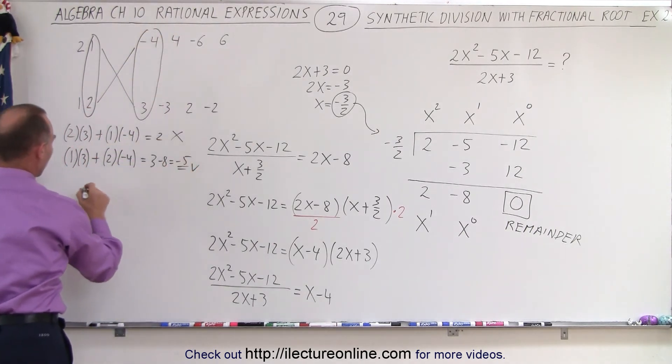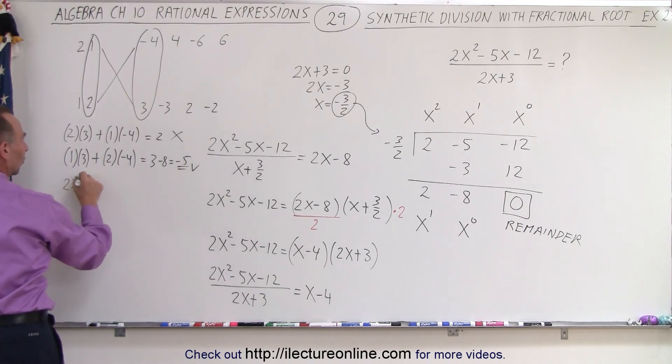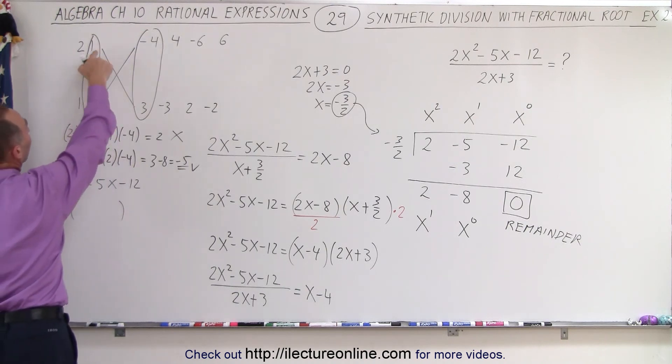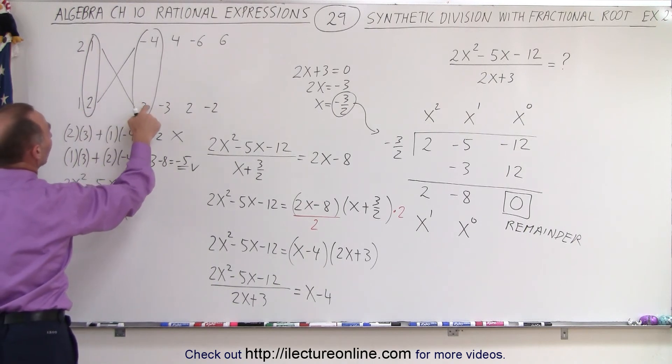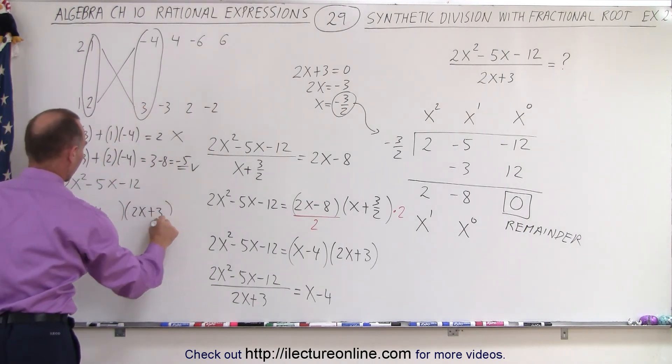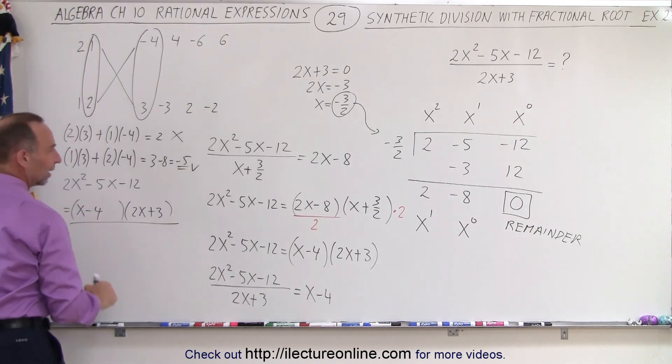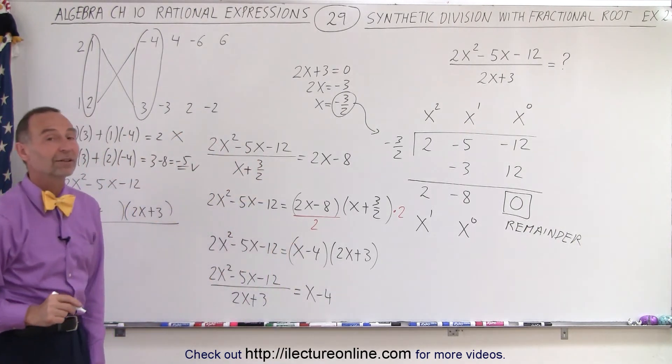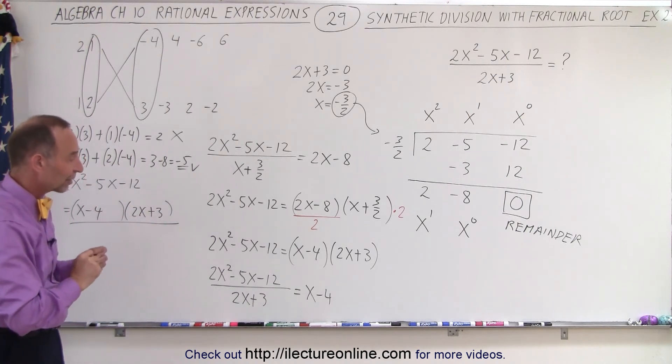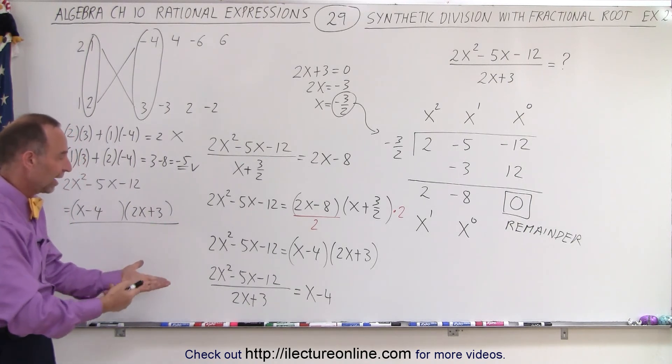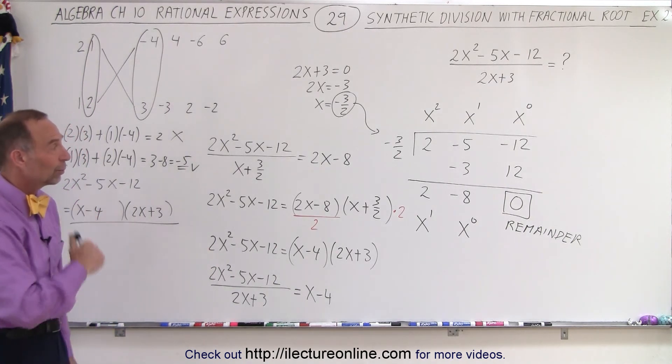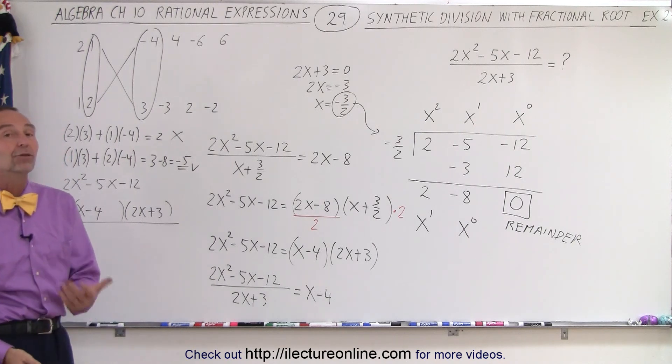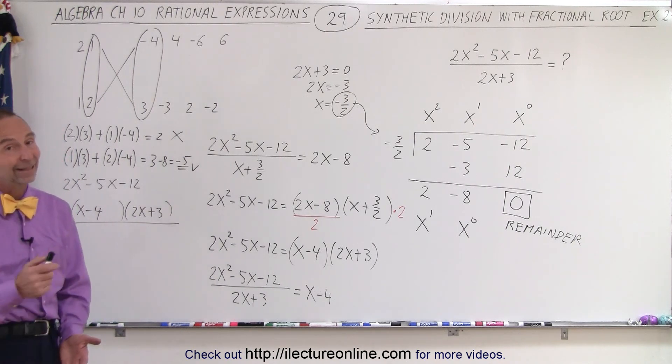And so that means that my polynomial 2x squared minus 5x minus 12 is equal to 1x minus 4 multiplied times 2x plus 3. And that is, of course, the exact thing that I found when I solved it using synthetic division. So you can see that in essence it's the same thing as factoring. It's the same thing as finding the other factor of our polynomial. And so you can see the connection. Hopefully that helps us understand what we do with synthetic division and how useful it can be to find the other factor. And that is how it's done.